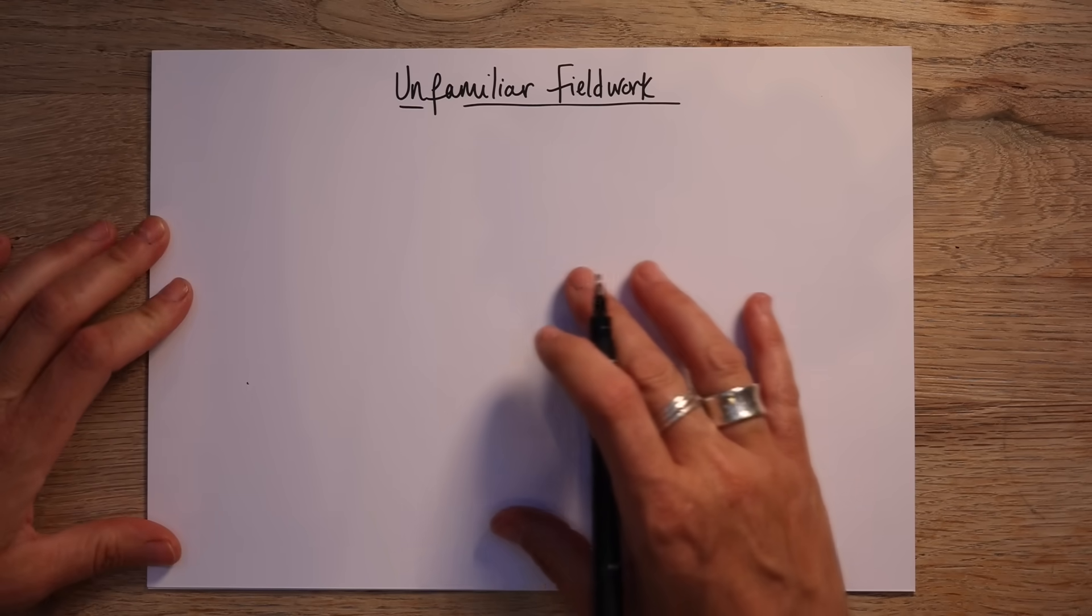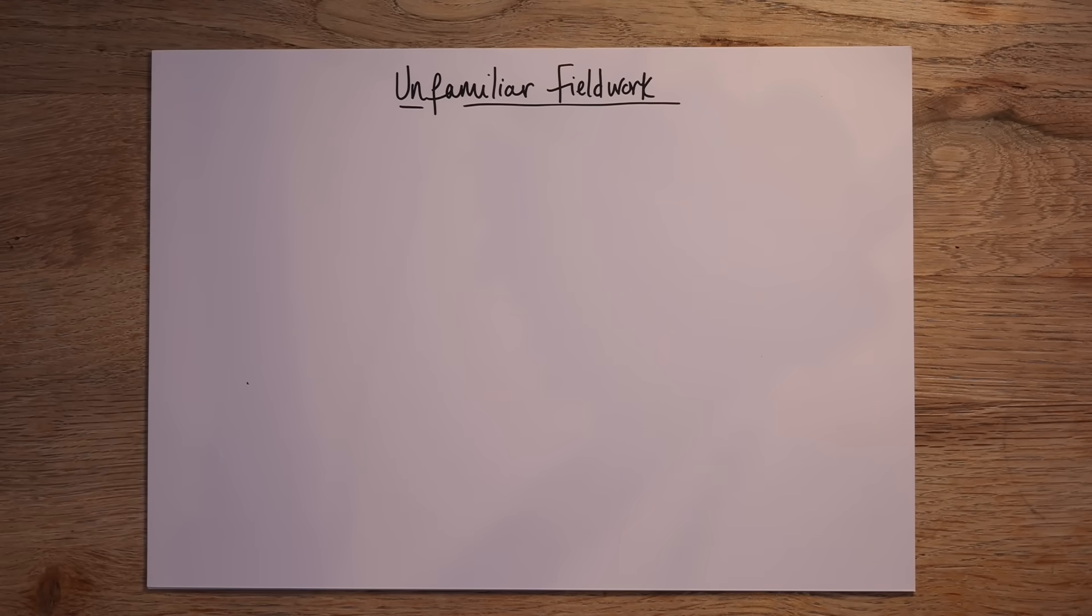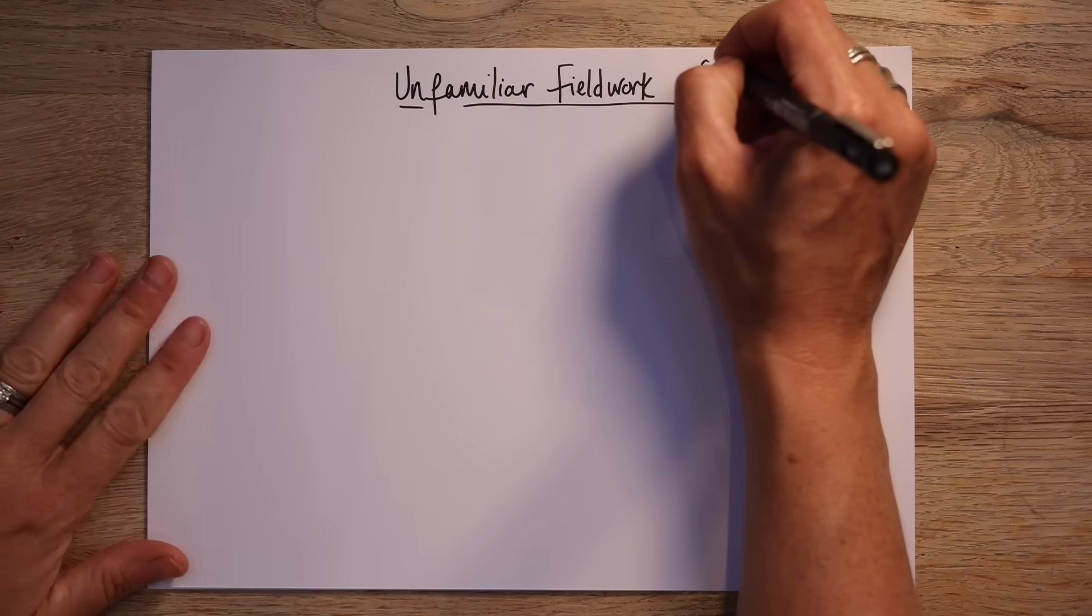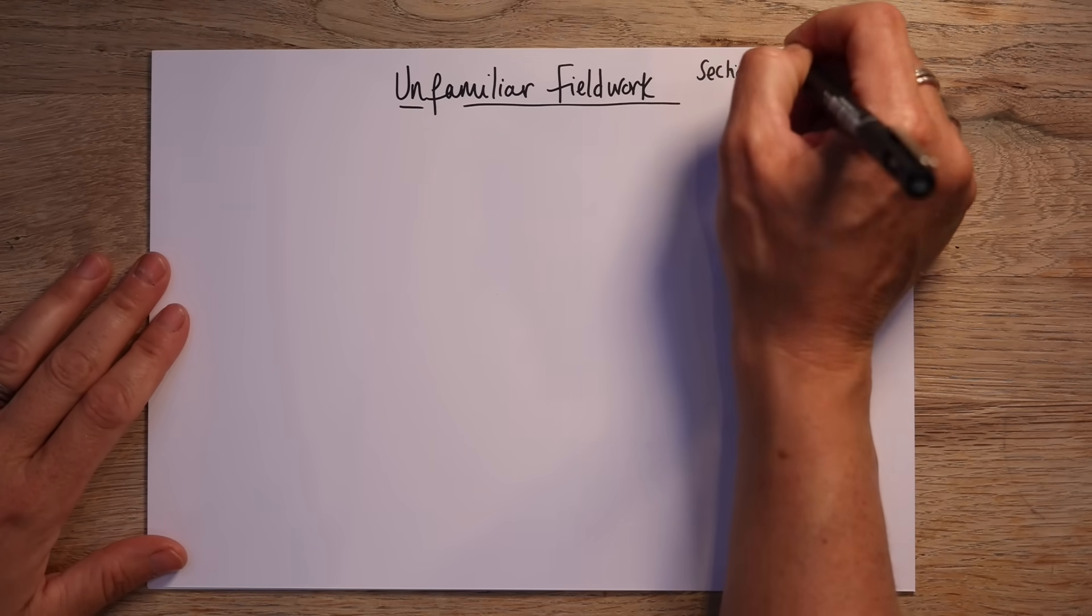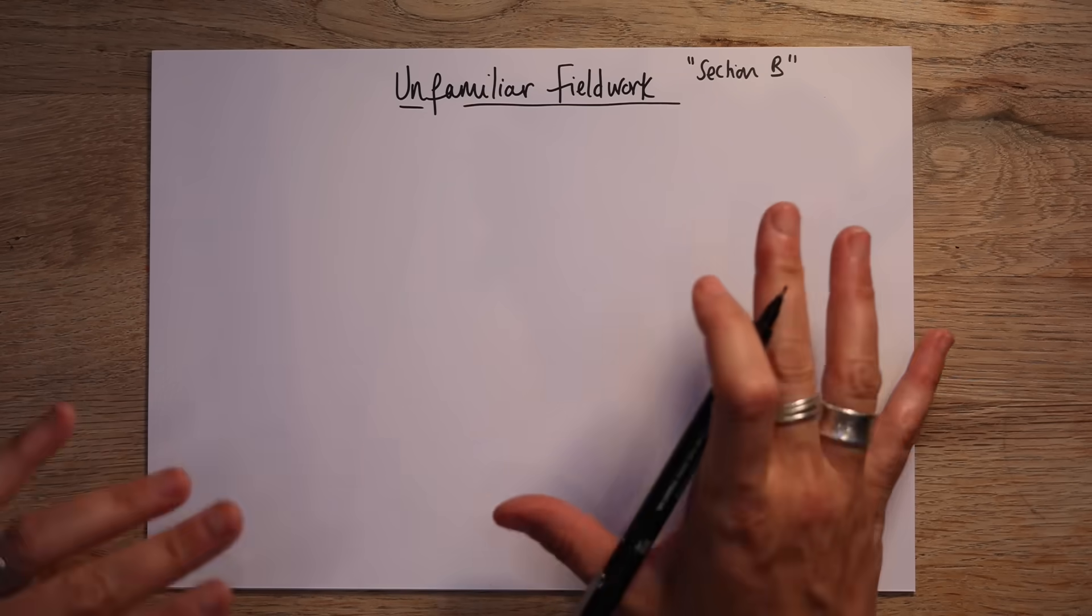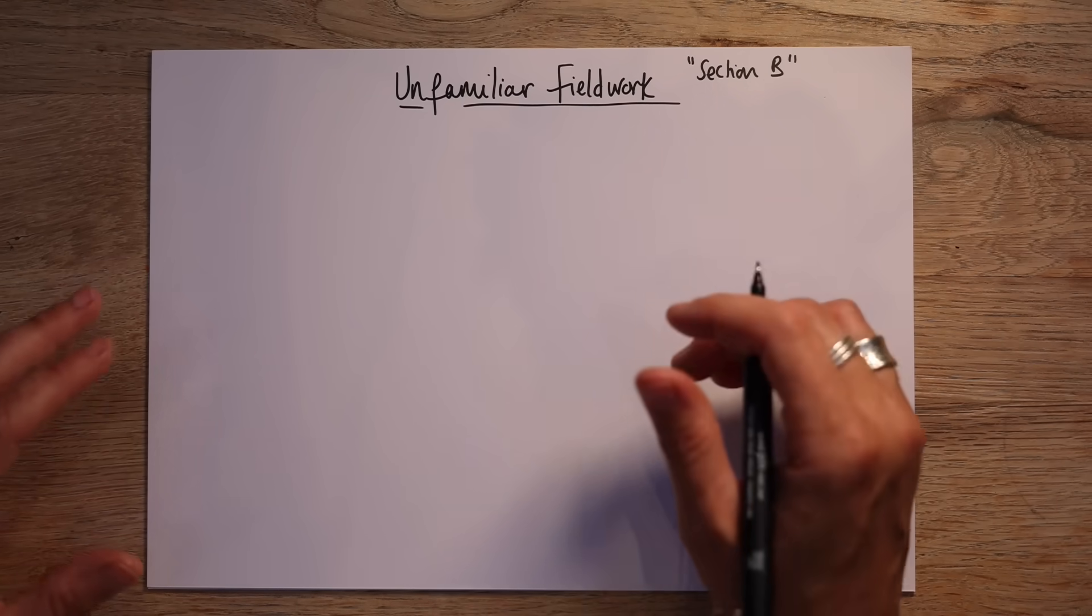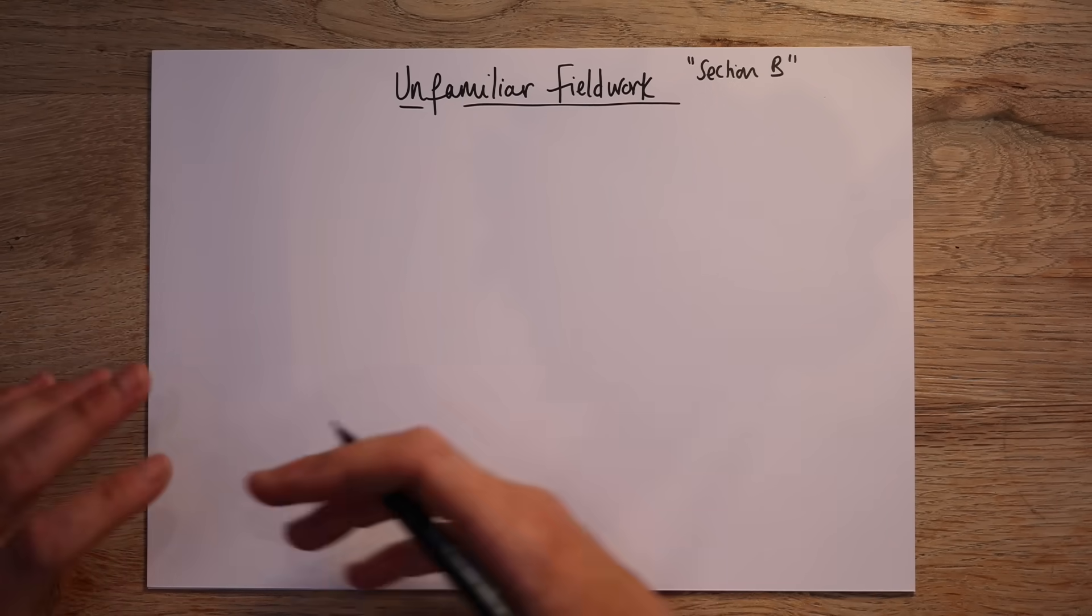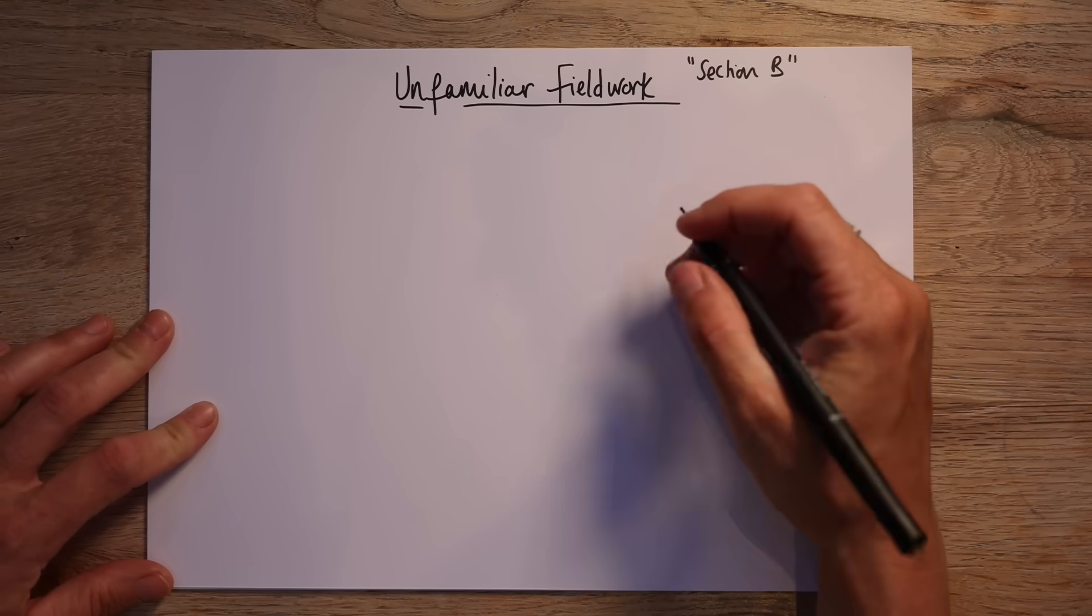Hey folks, so this is a very quick run through of section B of paper 3. Now this is the one that can kind of stump a few people, they're not really sure what it's about. So I'm going to break it down as much as I can, just keep it as simple as possible as I usually do.